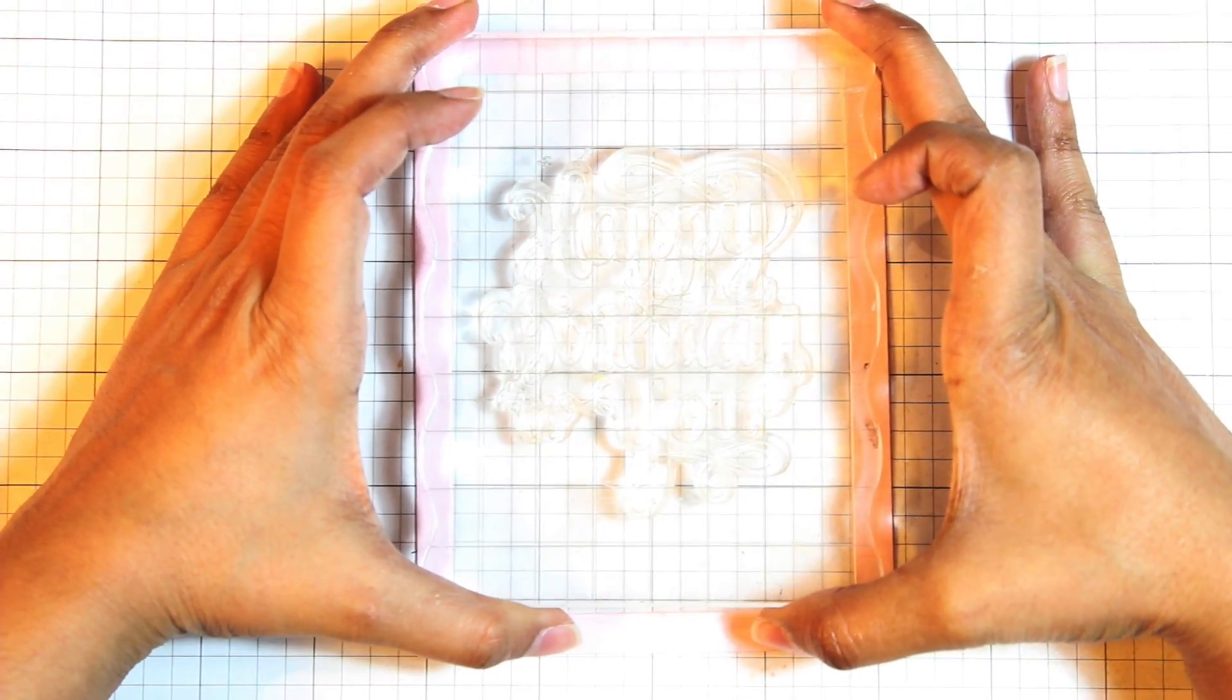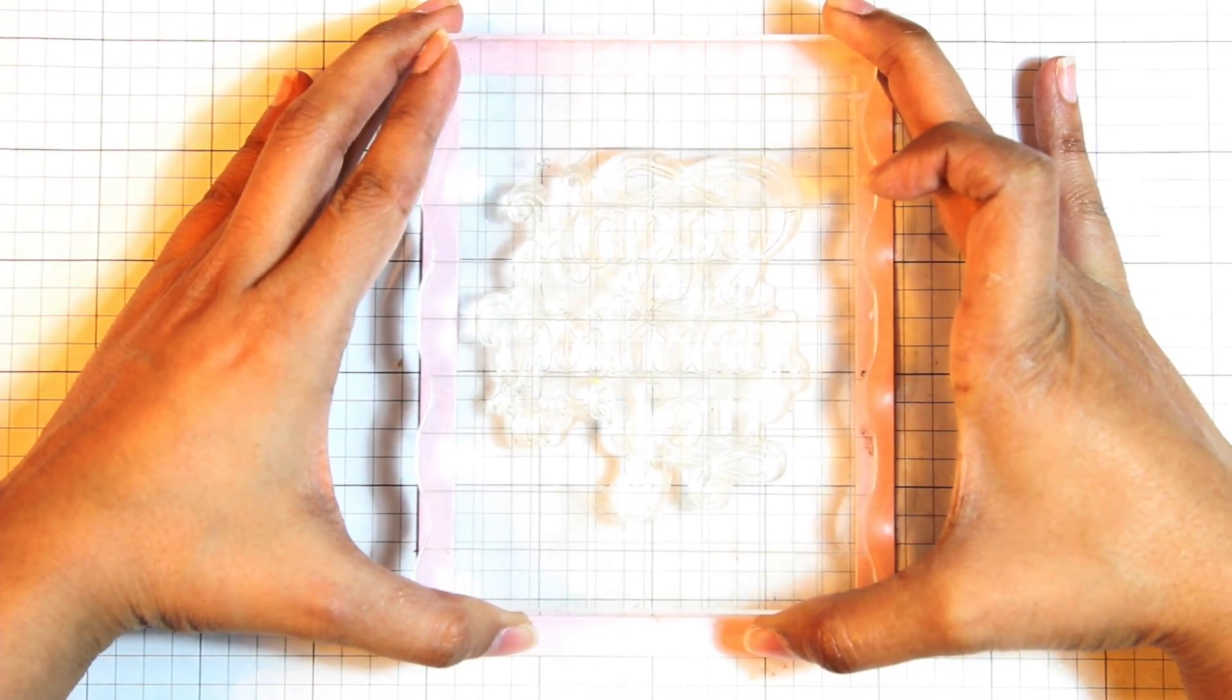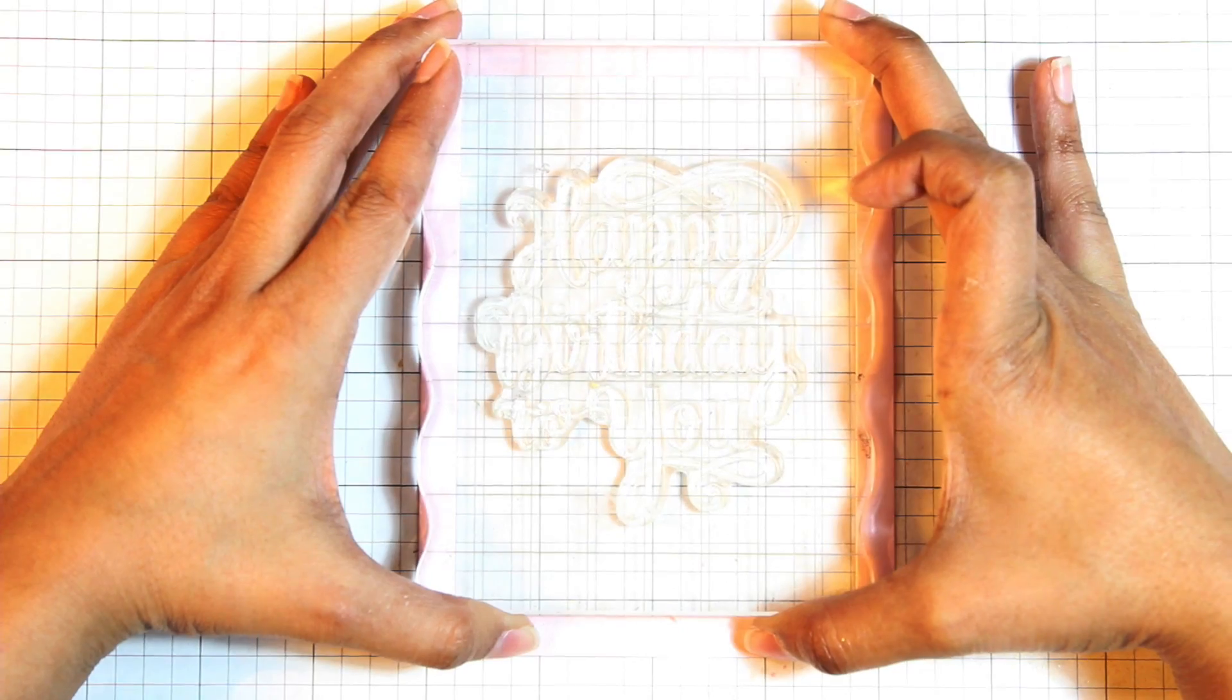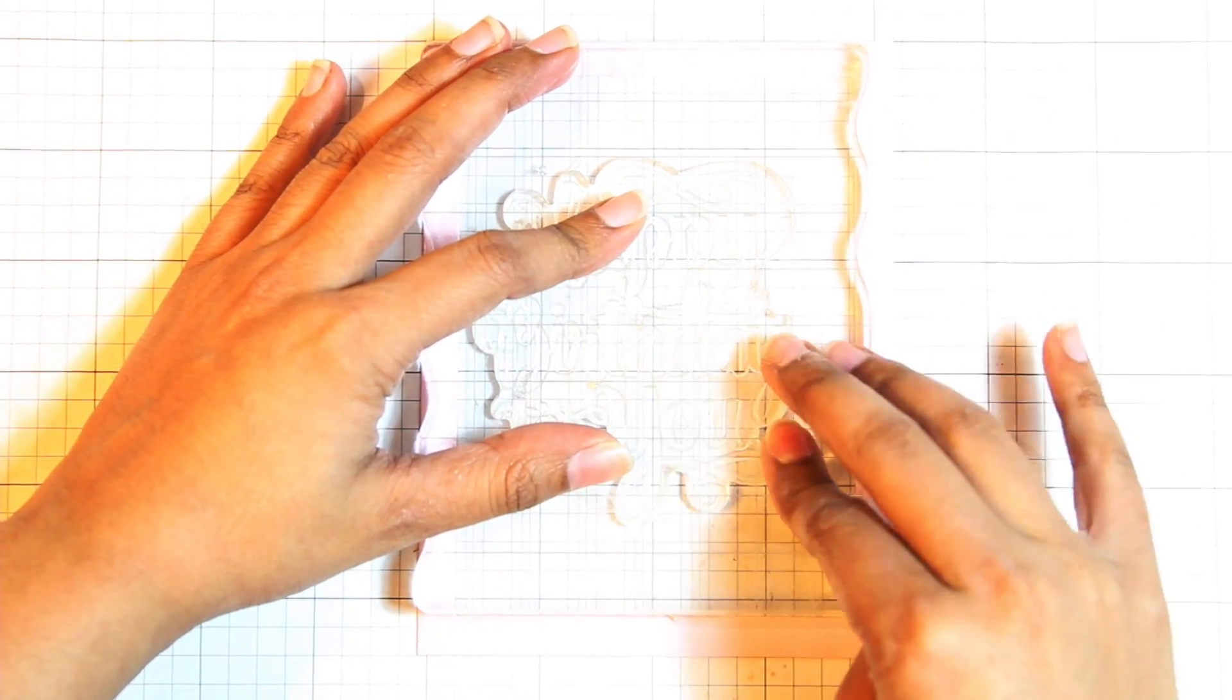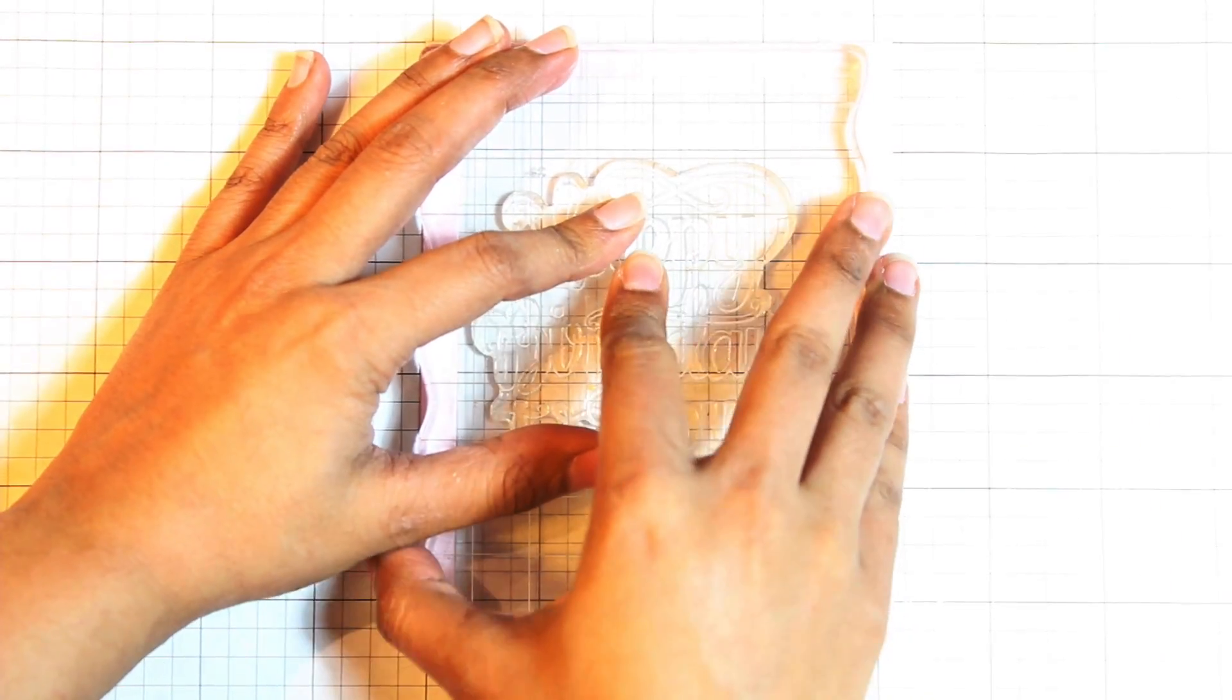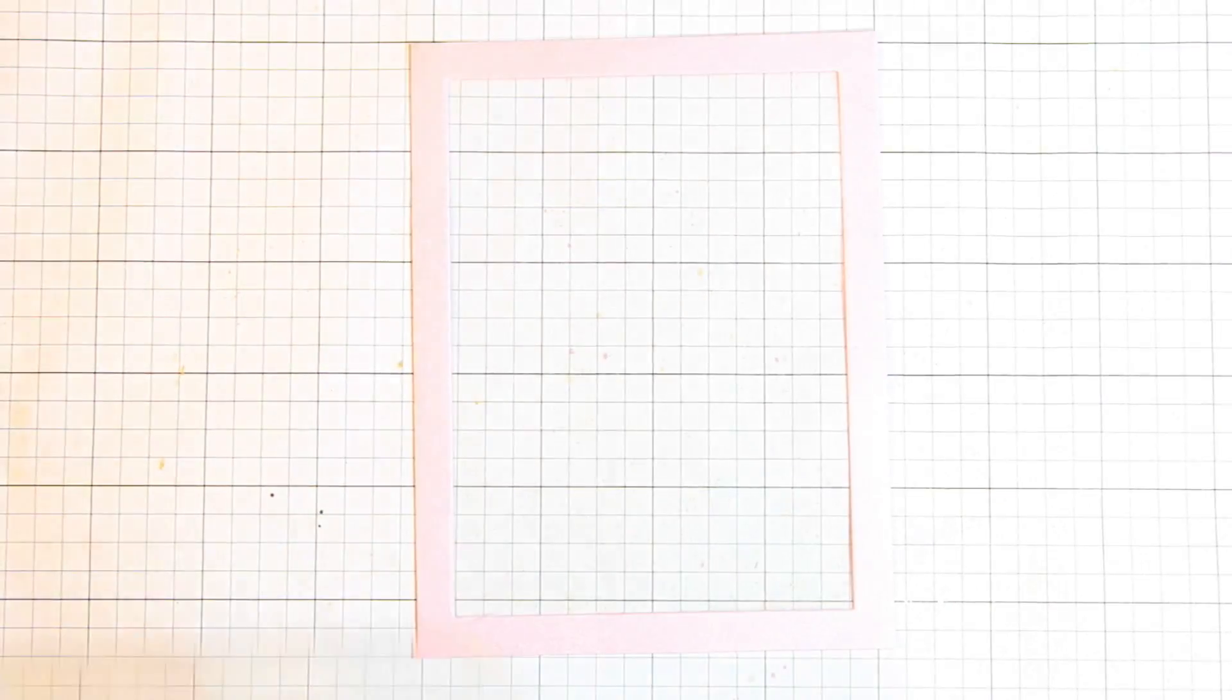Having done that, I can now ink up my stamp with my Versamark ink, and I can stamp this on top of the panel. When you're stamping onto acetate, it is very easy to actually smudge the image because the acetate is naturally a slippery surface. So you want to stamp down firmly and precisely, and you also want to make sure that you lift the stamp straight off in a vertical fashion without angling it at all. This will help prevent or minimize any risk of that acetate shifting and creating a smudged image.